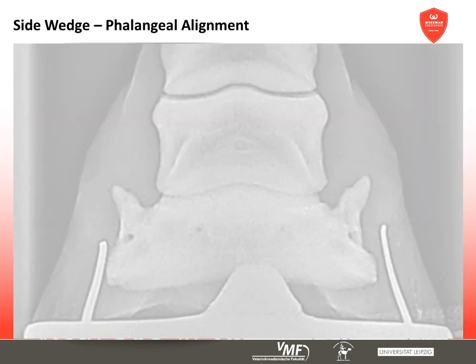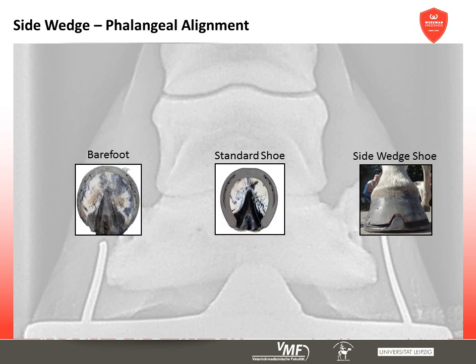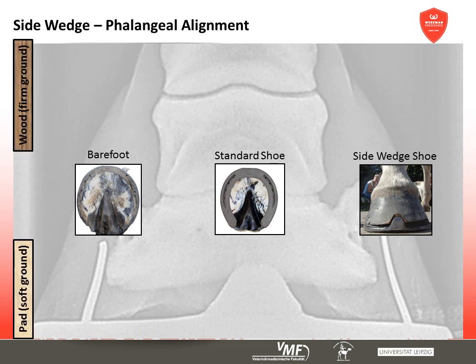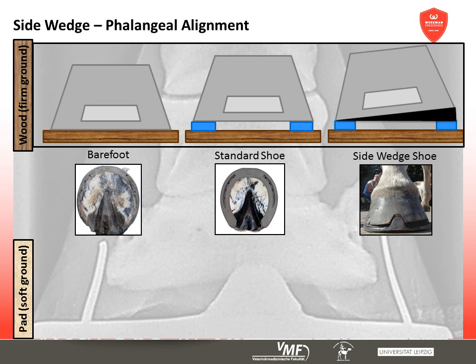We now explain the side wedge shoe's influence on the mediolateral orientation of the coffin bone in relation to the ground. The barefoot situation as well as the usage of standard horseshoes serve as comparison. Every radiographic examination was carried out on a firm wooden block and a block with soft padding. On firm ground the side wedge shoe has a distinct influence on the mediolateral orientation of the coffin bone, with the four degree elevation resulting in a 3.5 degrees steeper mediolateral angle towards the ground.